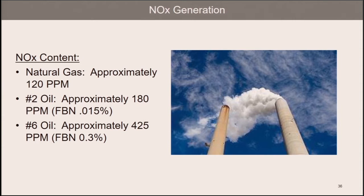No. 2 oil generates about 180 parts per million per pound with approximately 0.015% fuel-bound nitrogen, which we cannot do anything with in terms of reduction through thermal control. And for No. 6 oil, it generates about 425 parts per million per pound with 0.13% fuel-bound nitrogen, which we cannot remove thermally. So, getting rid of the fuel-bound NOx really requires a reformulated oil fuel — a synthetic — where the fuel-bound nitrogen is removed.